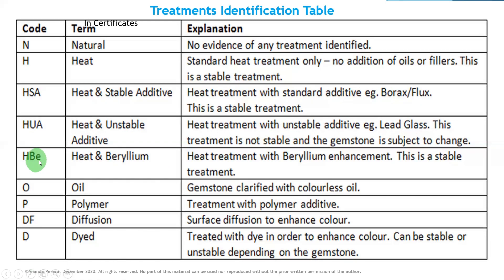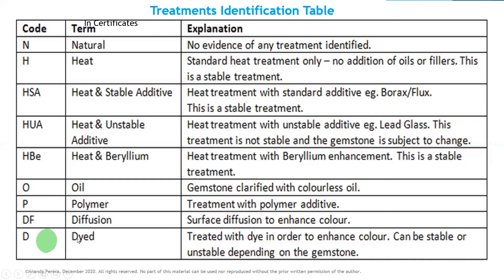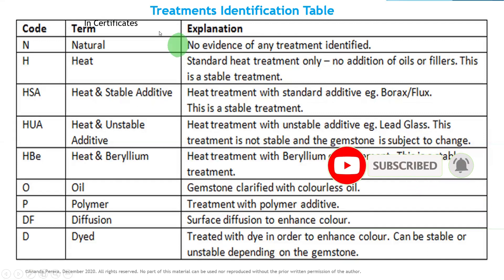O is for oil — the gemstone has been clarified with colorless oil. P is for polymer — treatment with a polymer additive. TF stands for diffusion — surface diffusion to enhance color. D is for dye — treated with dye in order to enhance color, which can be stable or unstable depending on the gemstone. These are the treatment identification tables used on gemological certificates.